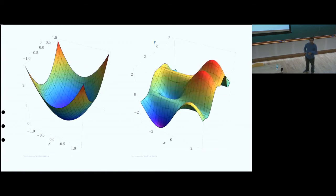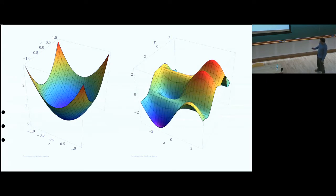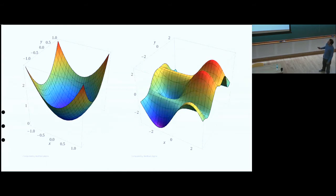The local minimum is not necessarily the global minimum. If the function is convex — meaning it has a bowl shape — there is only one minimum, which is the global minimum, and gradient descent is guaranteed to find it. But in many optimizations the function may not be convex and can have weird shapes. There can be points where the gradient is zero but which are not a minimum — what is called a saddle point — where the function is decreasing in some directions and increasing in others but the current gradient is zero.